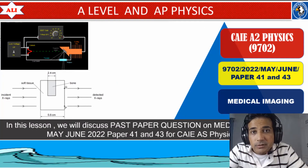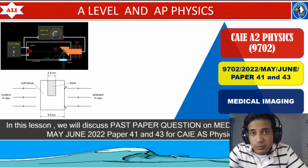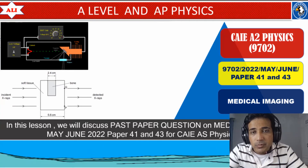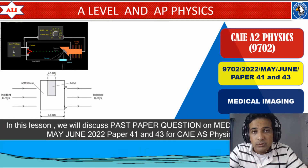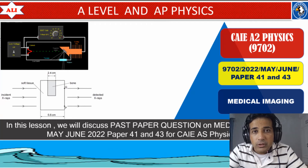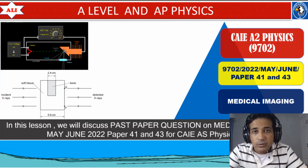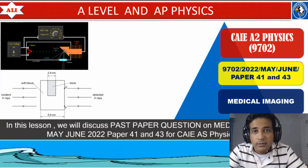Welcome to A-Level and AP Physics. In today's lesson, we will discuss a question on medical imaging from May June 2022, paper 4, variant 1. We will cover how X-rays are produced, how to calculate transmitted intensity through one or two different media, the difference between X-rays and CT scans, and concepts of good contrast and over contrast.